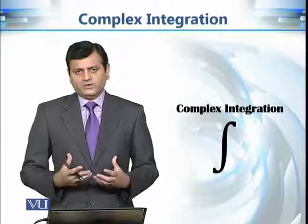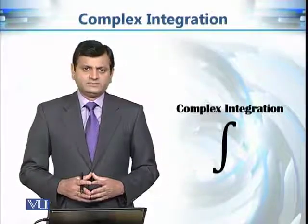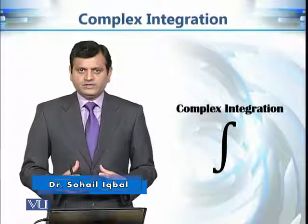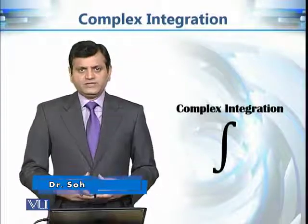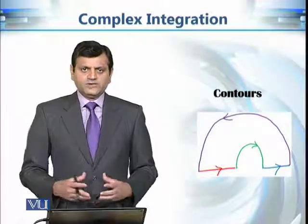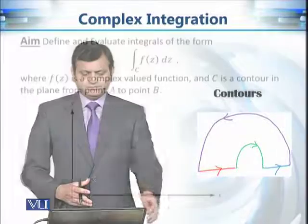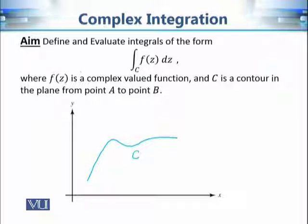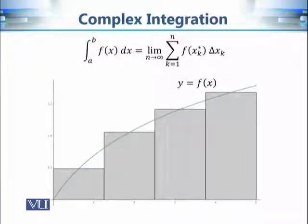This is a continuation of our discussion on complex integration. So far we introduced what complex integration is and defined the terminology of a contour, because when we integrate a complex valued function in the complex plane we integrate it along contours. Our precise problem is: we want to integrate a given complex valued function f(z) along a contour C in the complex plane from point A to B.